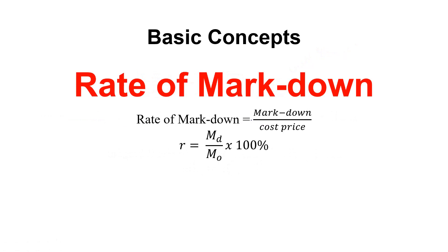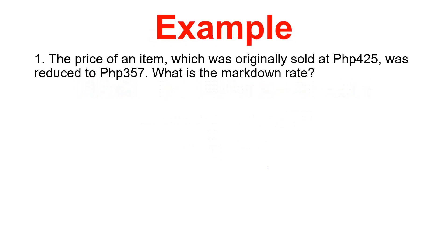One of the reasons why there is a markdown is because demand goes down — the item is not selling well, so they give a discount to catch the attention of the customer. To get the rate of the markdown, it is markdown over the cost price times 100 percent. The markdown is based on the cost price, so to get the rate we get the quotient of the markdown and the cost price, times 100 percent.